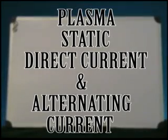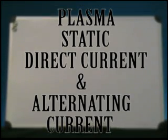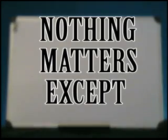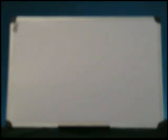There are different types of electricity: plasma, static, direct current, and alternating current. Special emphasis on direct current and alternating current, because plasma and static are not really what we're going to be talking about here.